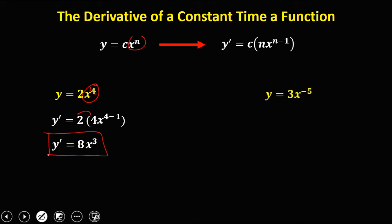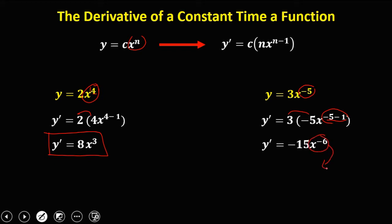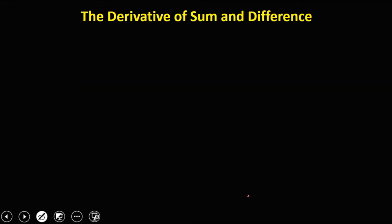For y equals 3 times x to the power negative 5, y prime equals 3 times negative 5x to the power negative 6. To make the exponent positive, bring it down, so y prime equals negative 15 over x to the power 6.